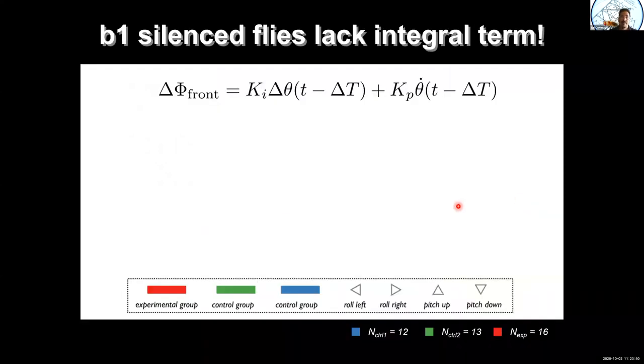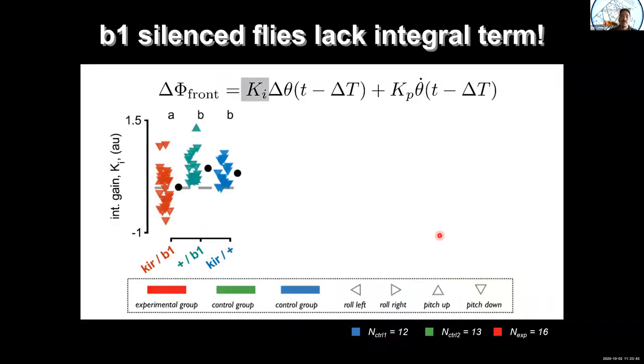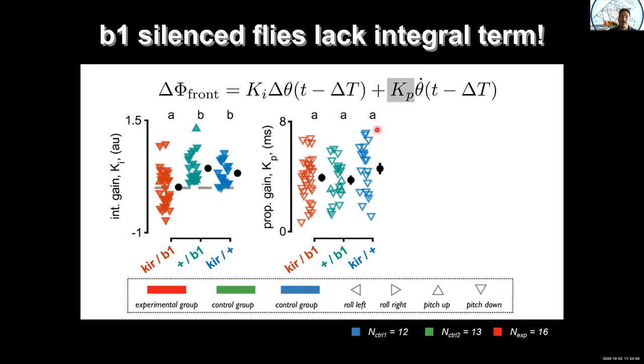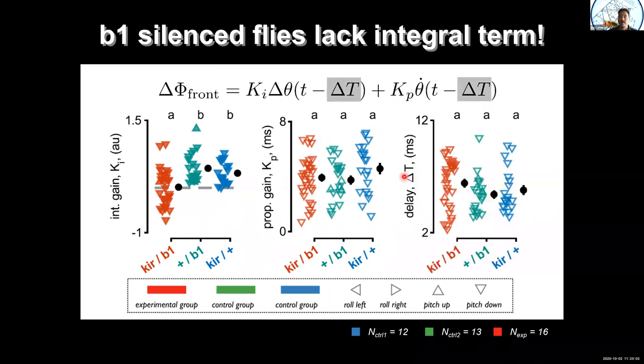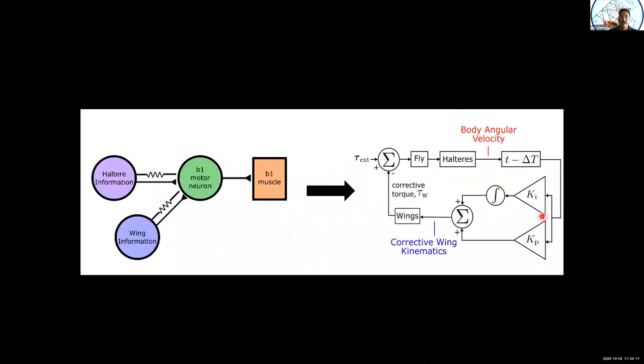You can quantify this data again by heroically doing this for many, many flies. What we find is that as we showed in the movies, the integral gain is substantially different when you look at the silenced neuron as compared to the normal flies and the proportional gain looks unaffected and the time delay looks unaffected for these flies. And it doesn't really matter if you roll left or pitch up, pitch down, they basically have the same types of behaviors. So when we take out this motor neuron, we essentially kill this integral part of the control diagram.